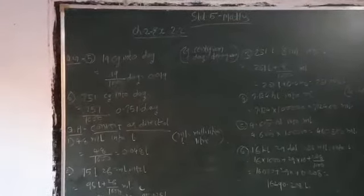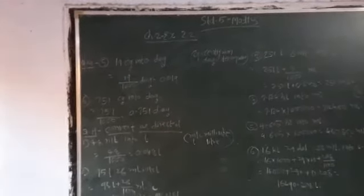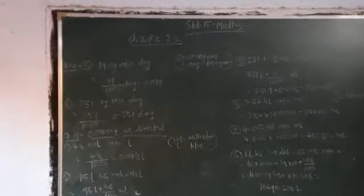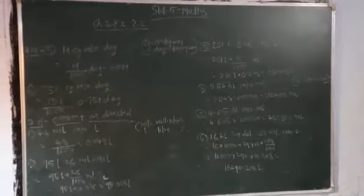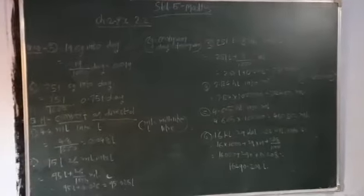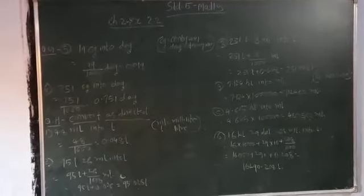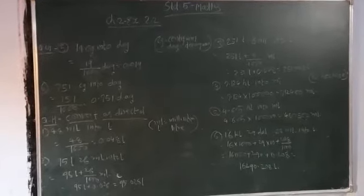Question Number 8. Convert as directed. 48 milliliter into liter. So 1 liter equals 1000 milliliter, so 48 milliliter will be 0.048 liter.